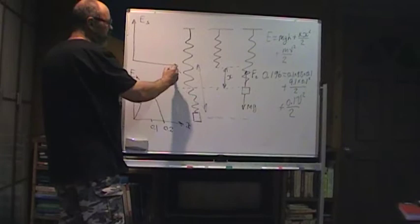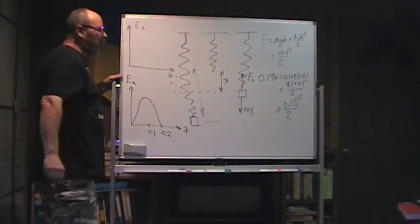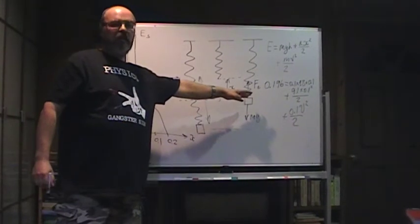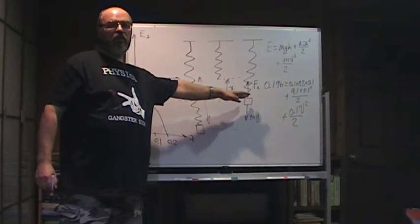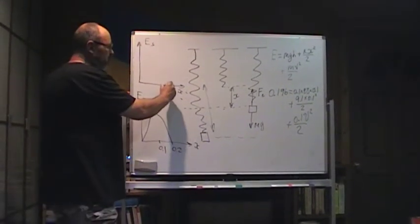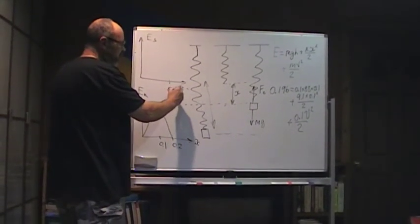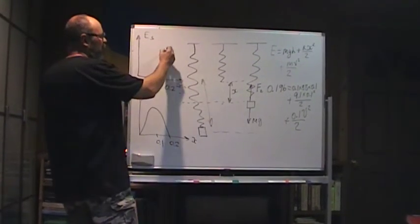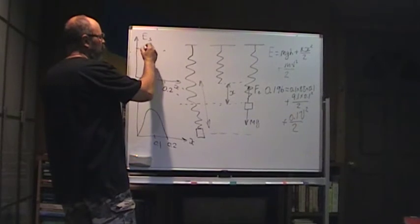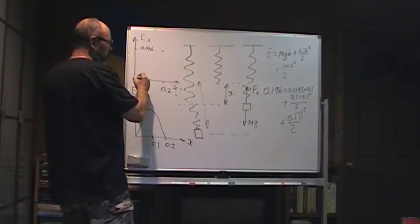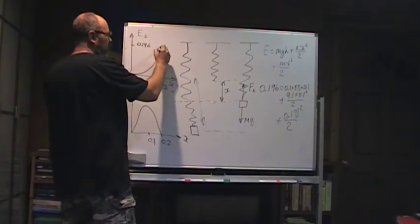Strain potential energy against x. When there is no extension, the strain potential energy equals 0. The biggest is at the bottom at 0.2, and obviously looking at the formula Kx squared over 2, it has to be here 0.196. That will be the parabola.